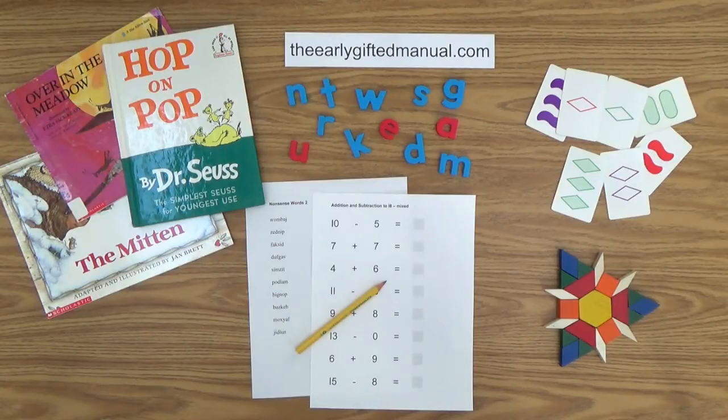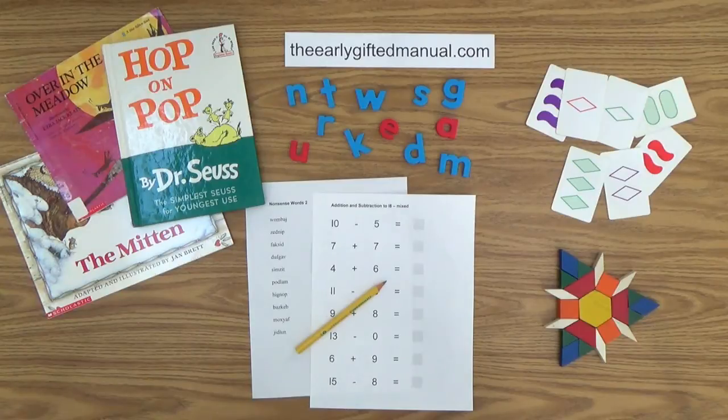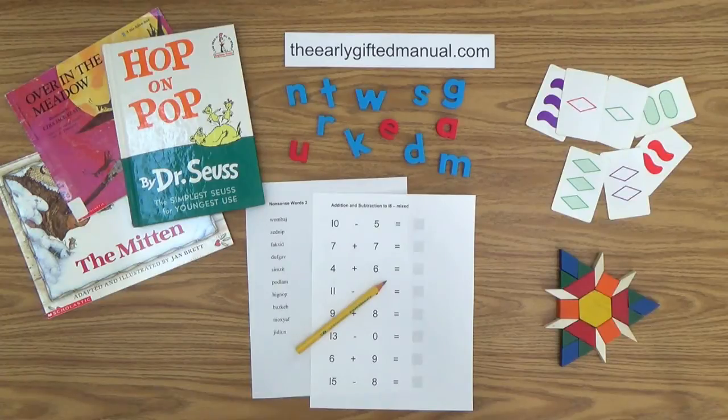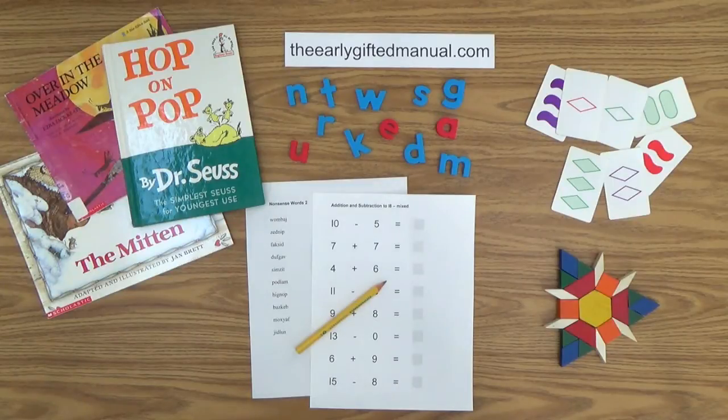As the video lessons are designed to work in conjunction with the program on my website, I ask you to, at some point, click on the URL link in the description box below, and this action will take you to theearlygiftedmanual.com. By doing that, you will be able to put this lesson and all of the video lessons here on my channel in the proper context of the total program that I am presenting to you and your child.